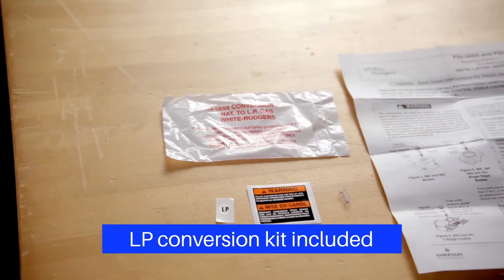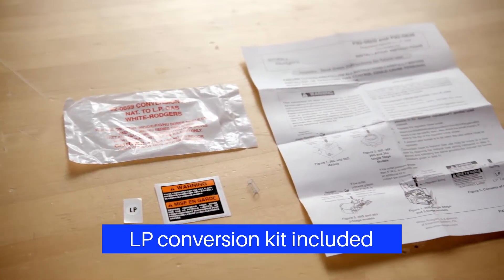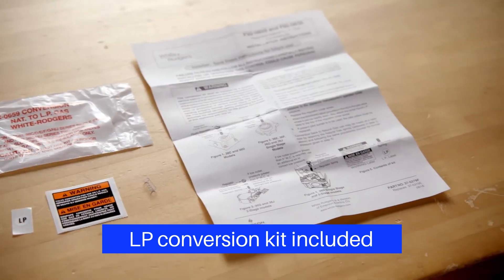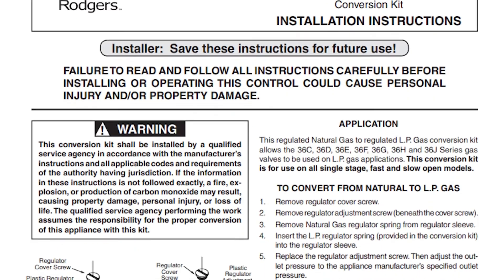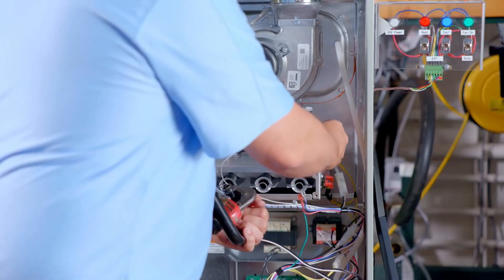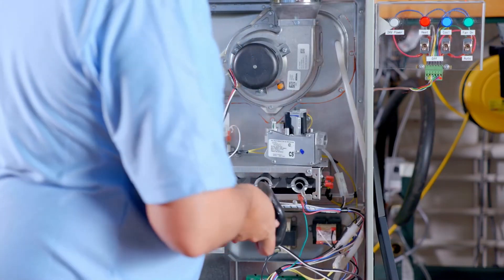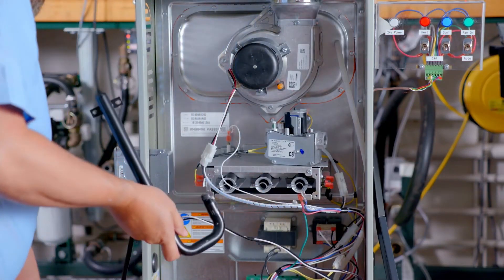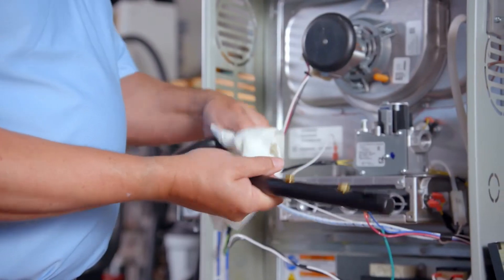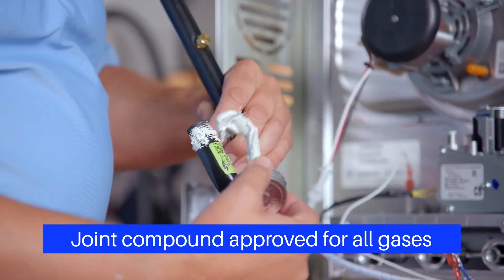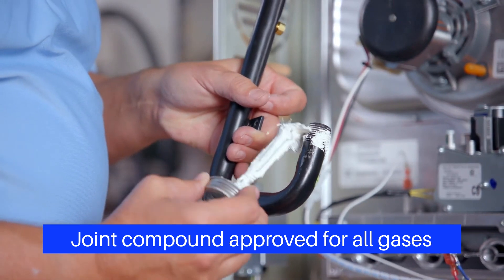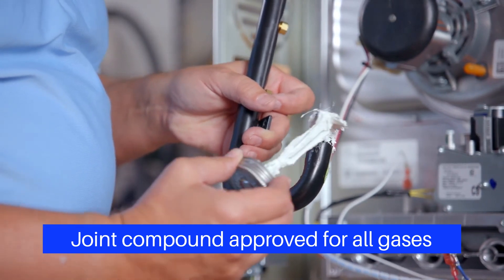The 36J22214 Regulator comes set up for natural gas. For liquid petroleum gas conversion, use the included White Rogers 920659 LP Gas Conversion Kit. Follow the conversion instructions included in the kit. For this application, natural gas is used so no conversion is needed. Clean the manifold threads and apply pipe joint compound that is approved for all gases only to the male threads of the manifold. Do not apply the compound to the first two threads.